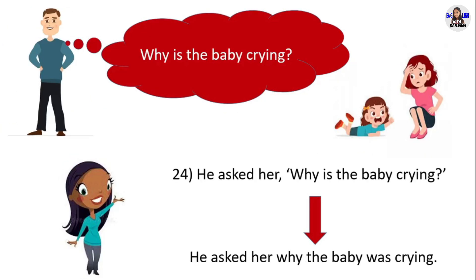Next example: 'Why is the baby crying?' He asked her 'Why is the baby crying?' in direct speech. In reported speech, he asked her why the baby was crying. This is a WH question — remember to use the WH word before the reported question. 'Is crying' in present continuous changes into 'was crying' in past continuous.